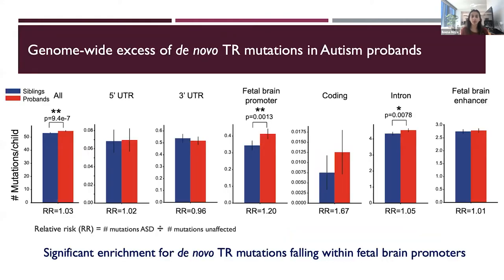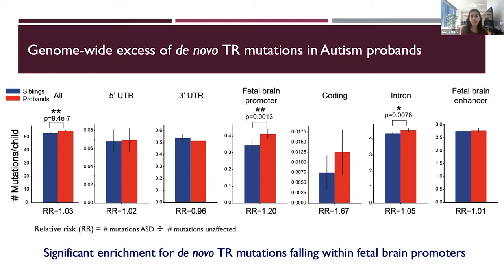We then compared healthy children to children with autism to see patterns of mutation and find areas in the genome enriched for potential autism association. Healthy siblings are shown in blue and represent the neutral background rate of de novo mutations, while autism probands are indicated in red. Overall, we find a genome-wide excess of mutations in autism children — on average, autism children have about one more autosomal mutation than their unaffected siblings.